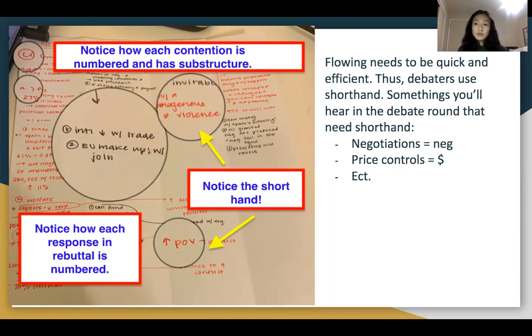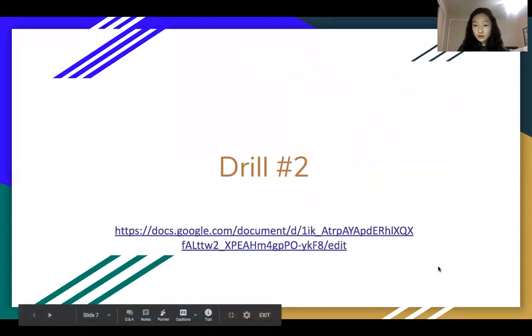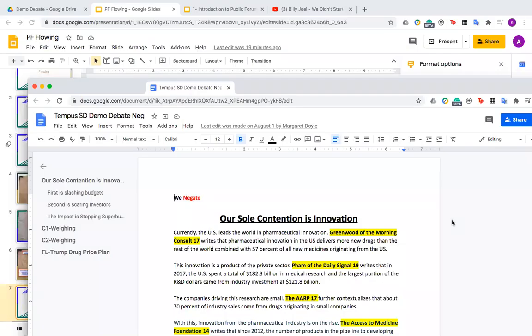So now we're going to look at another drill. For this drill, I'm going to read a case on the Medicare for All topic. And I want you guys to take out a piece of paper, take out a red pen because this is a red case. I mean, this is a neg case. Sorry about that. And I want you to flow it for practice after our lesson. Just a review. You should include shorthand, number the contentions, get some card evidence names. If everyone is ready, I will begin.